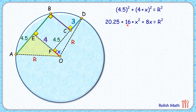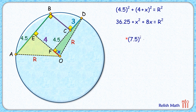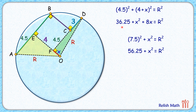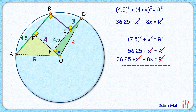We get 20.25 + 16 = 36.25, leaving one equation in two variables. For a second equation, consider right triangle DFO: (3 + 4.5)² + x² = R², so 7.5² + x² = R², giving 56.25 + x² = R². Subtracting the first equation from the second cancels both x² and R², leaving 56.25 − 36.25 − 8x = 0, so 20 = 8x, giving x = 2.5 cm.